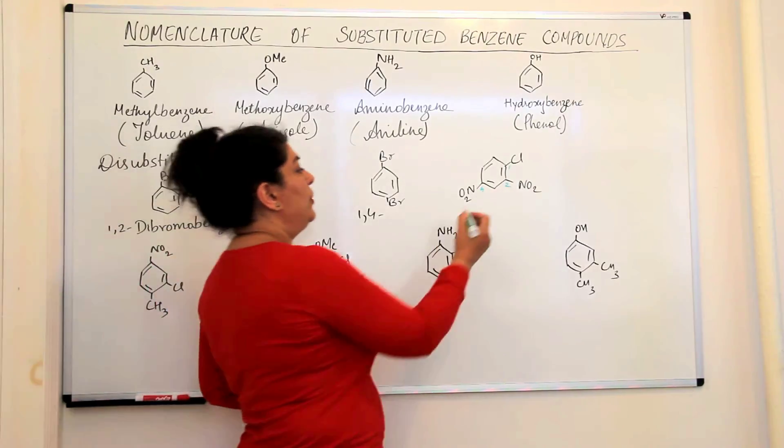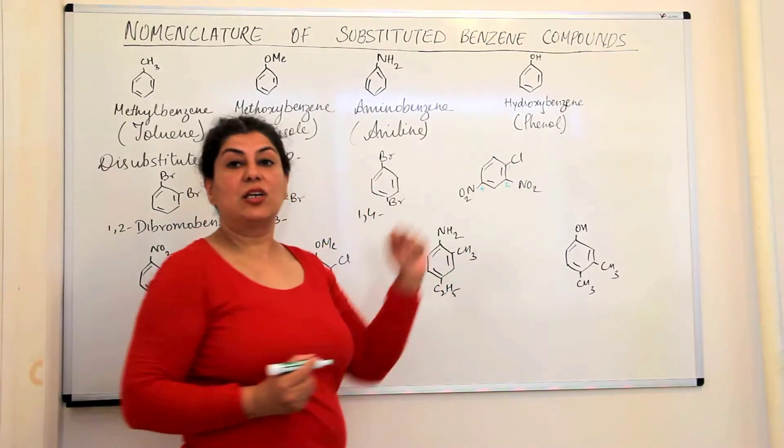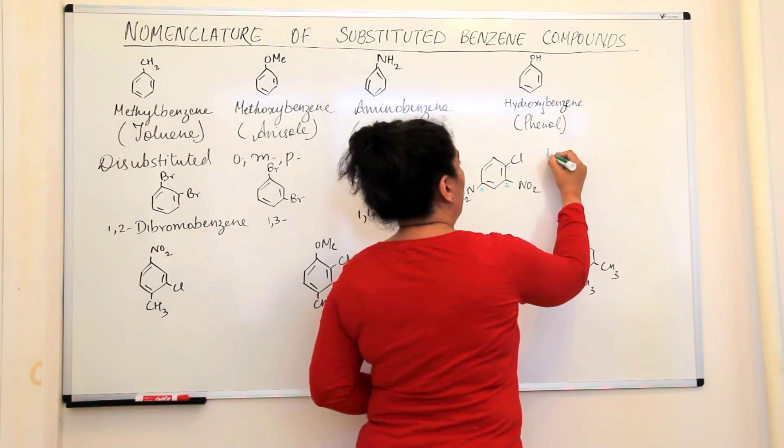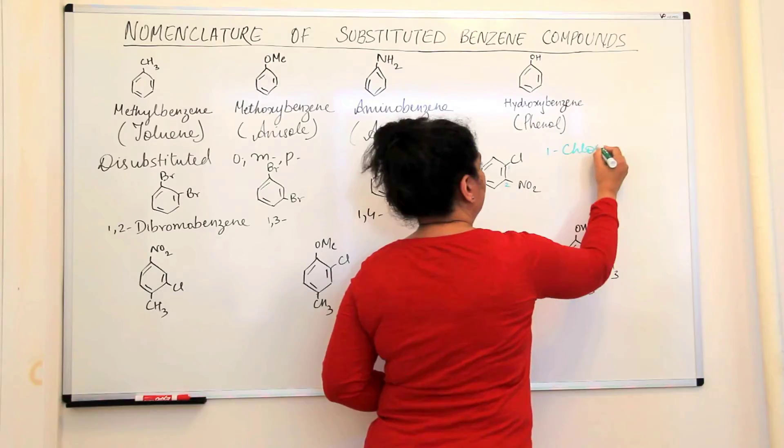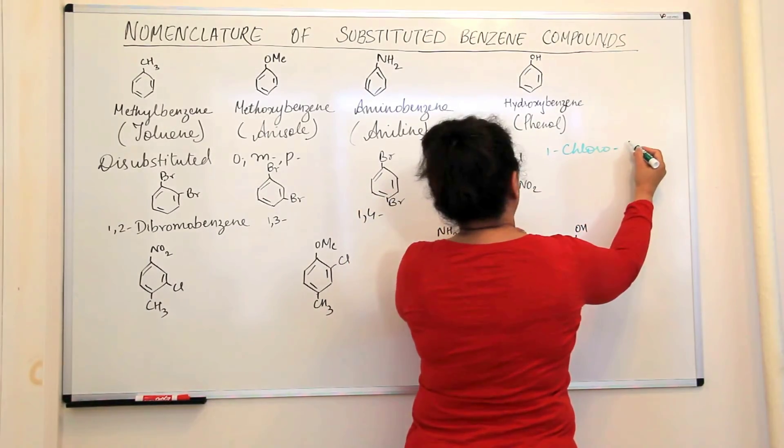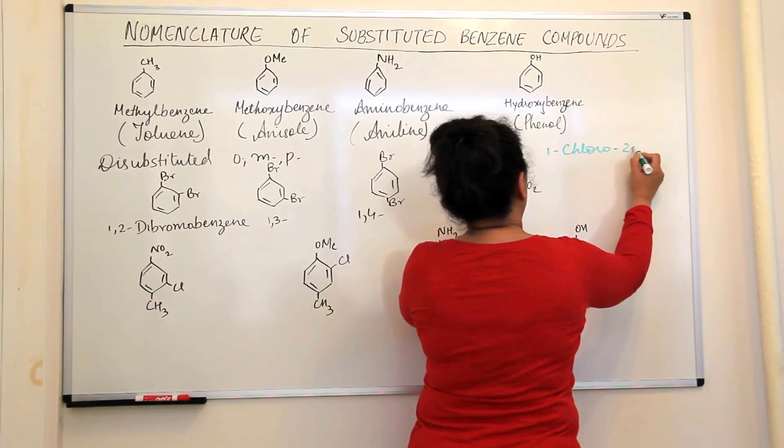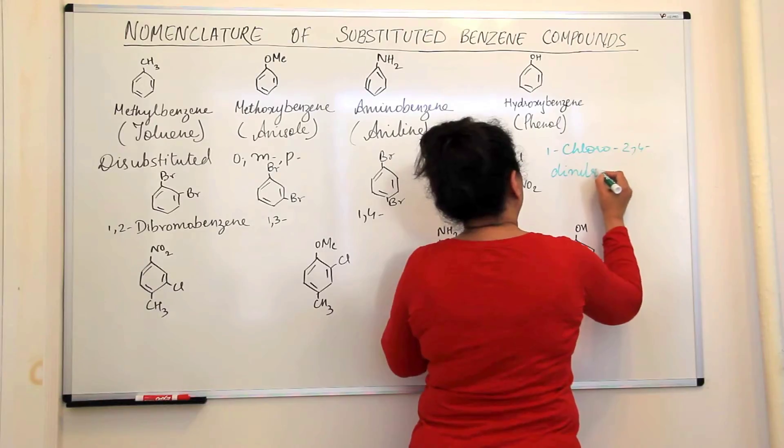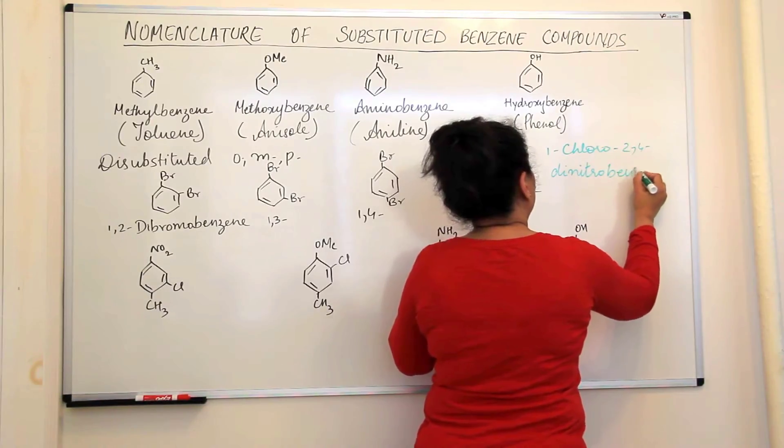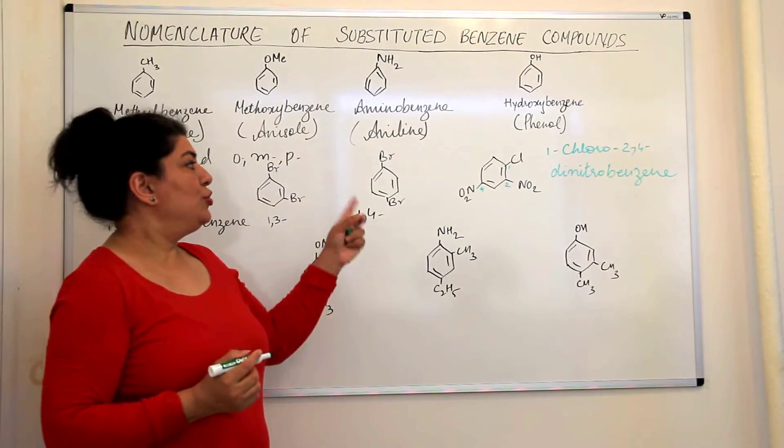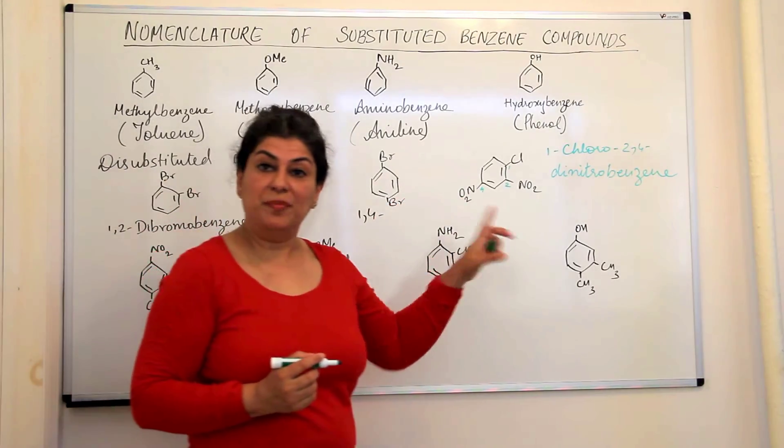Okay? Now, it has di-nitro and it has a chloro. N and C. C comes first. So, I will write this as one, chloro, two, four, di-nitro-benzene. Am I clear? This would be one, chloro, two, four, di-nitro-benzene.